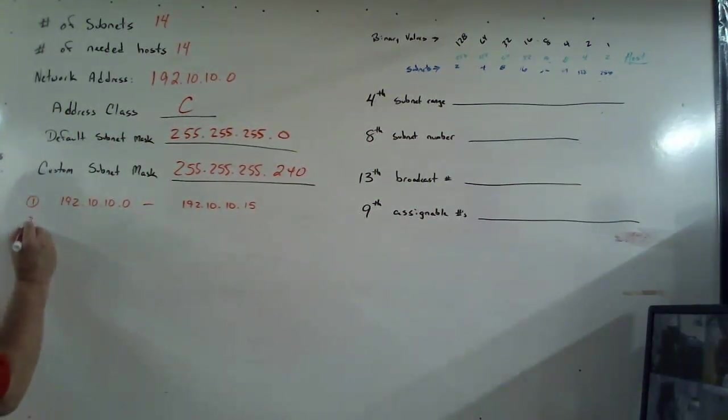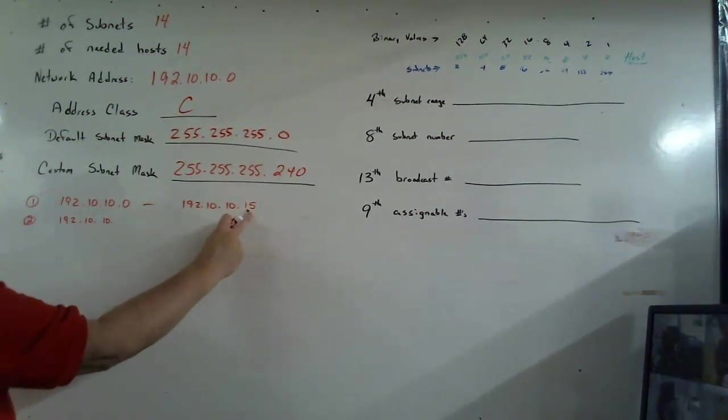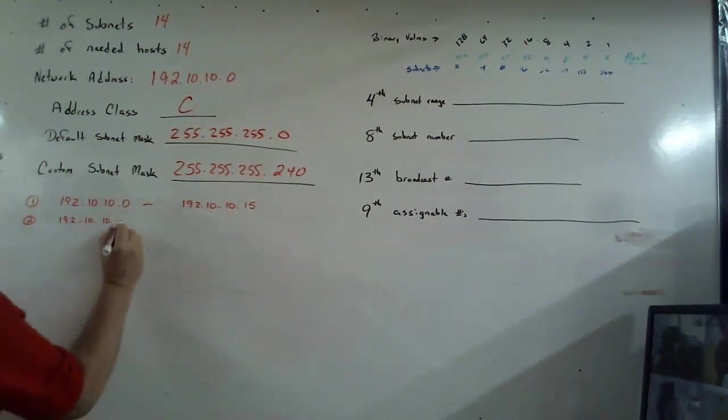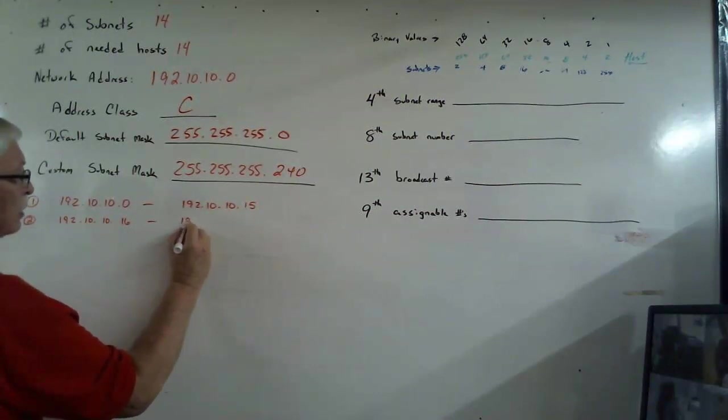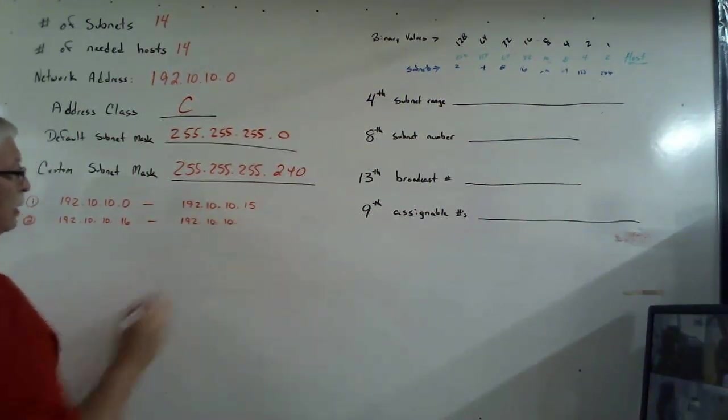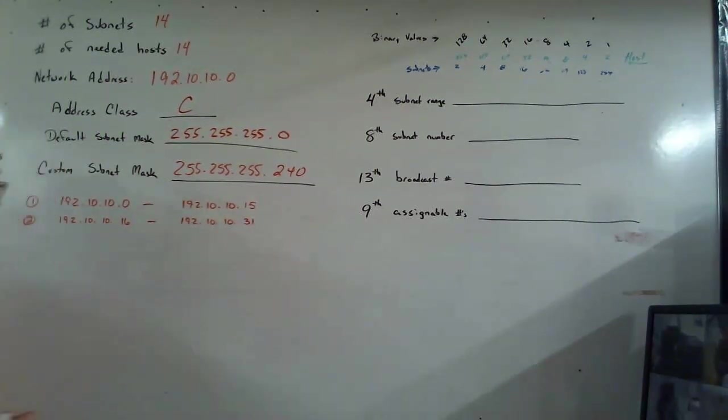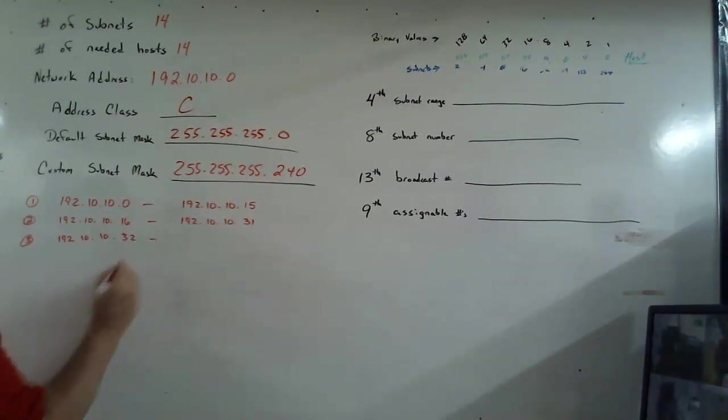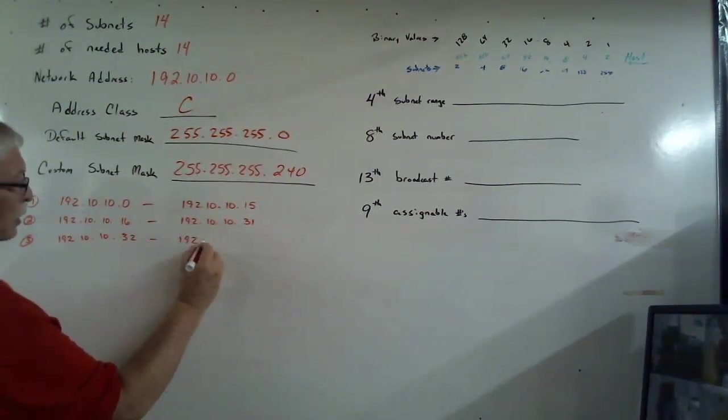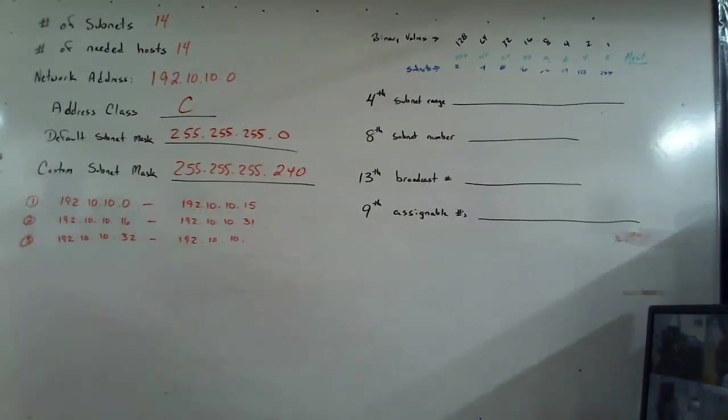The second range is going to start at the very next number after the last one. So one past 15 would be 16. What does it go to when we get 16 more numbers? Well, 192.10.10 and then we should have 31. The third range, 192.10.10. One more number, 32. We count to our 16. And we end up with, I check my cheat sheet, make sure I don't cheat, 47.